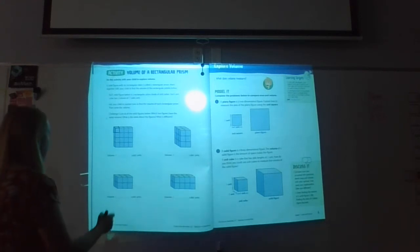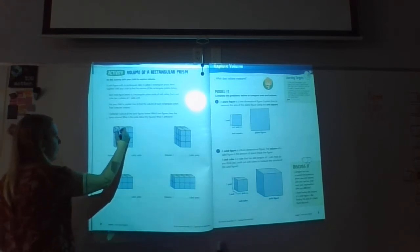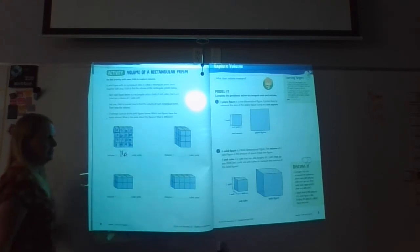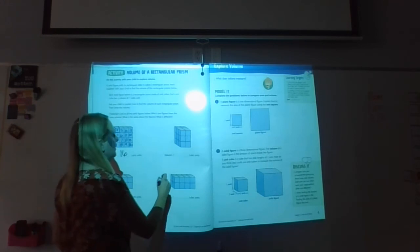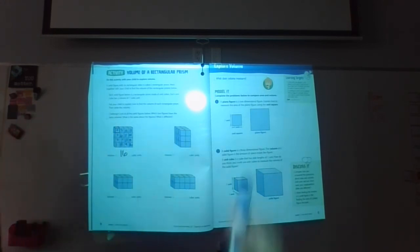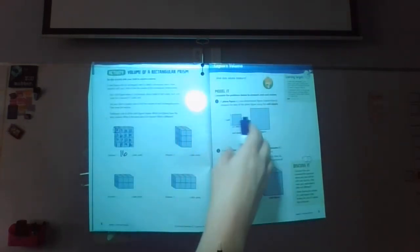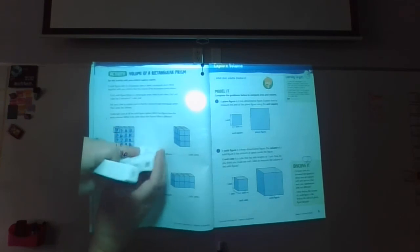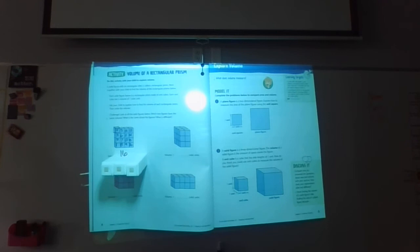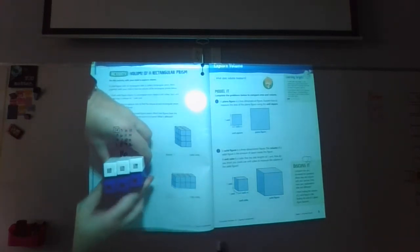All right, so let's count these up. This one has 1, 2, 3, 4, 5, 6, 7, 8, 9, 10, 11, 12, 13, 14, 15, 16 cubic units. Now, this one is going to be a little tricky because we can't see all of them. Let me show you guys using cubic units. Here's part of it. And here's the other part of it. Okay, so that's our shape.